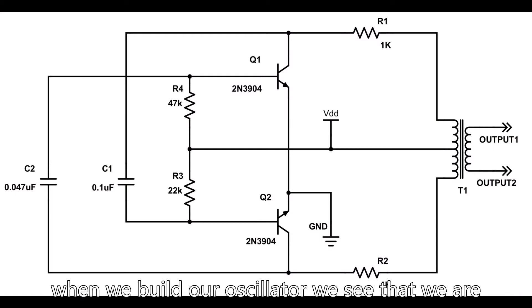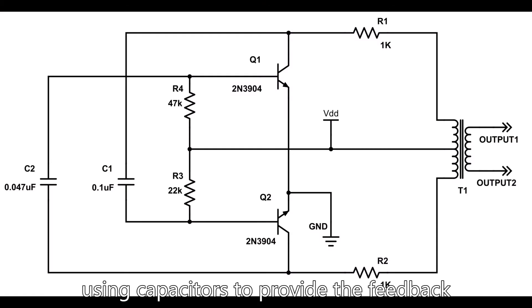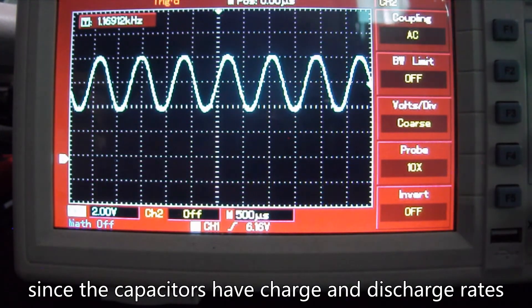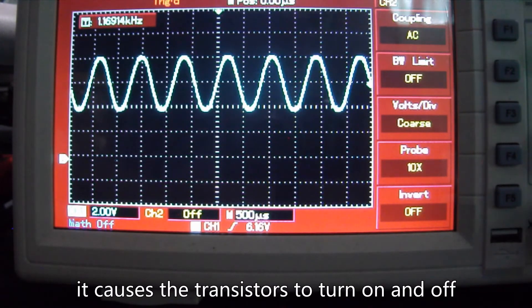When we build an oscillator, we see that we are using capacitors to provide the feedback of the output into the input. Since the capacitors have charge and discharge rates, it causes the transistors to turn on and off which results in oscillation.